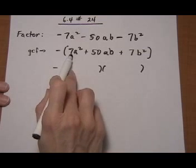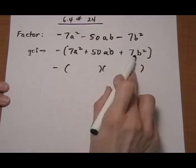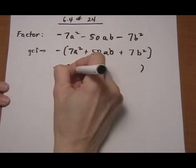There aren't many options here. We can have 7 times 1. Same here, 7 times 1. So I am just going to put them in.